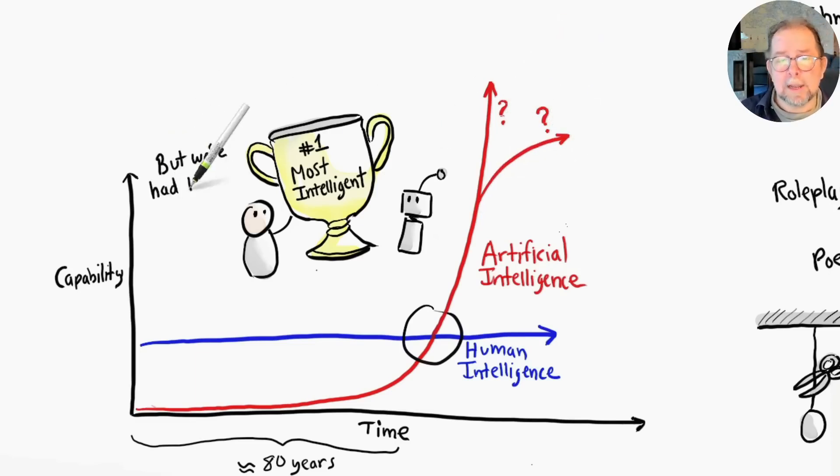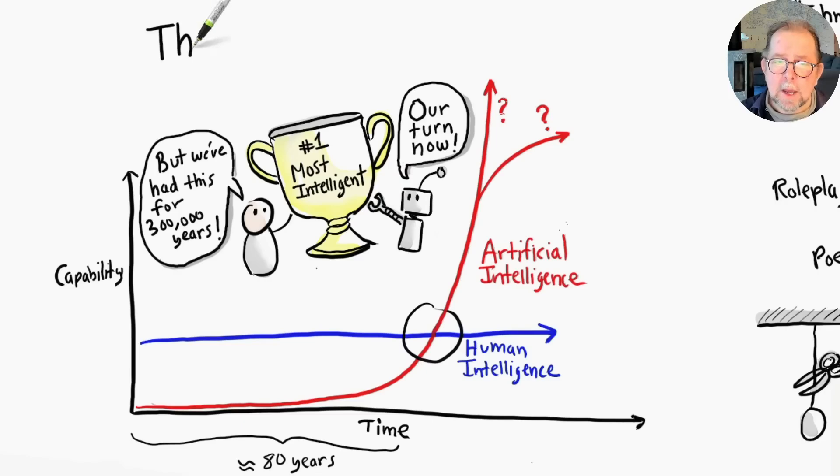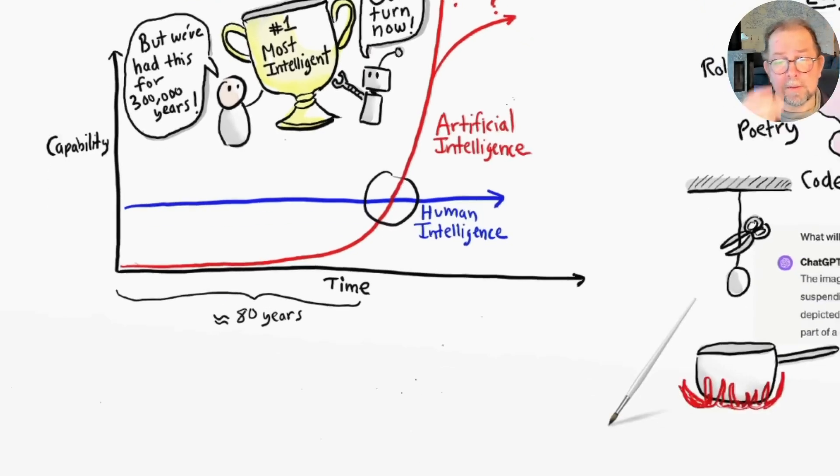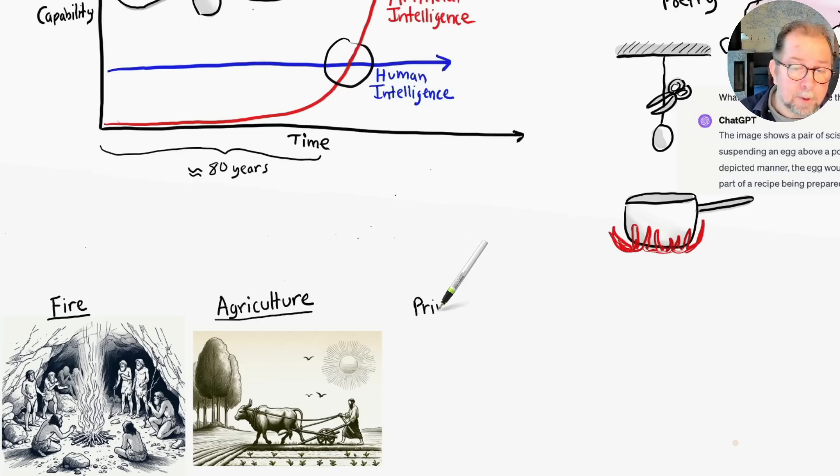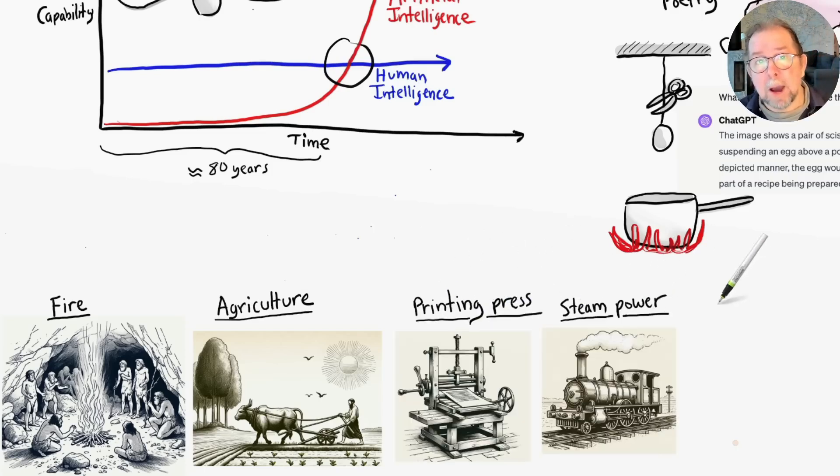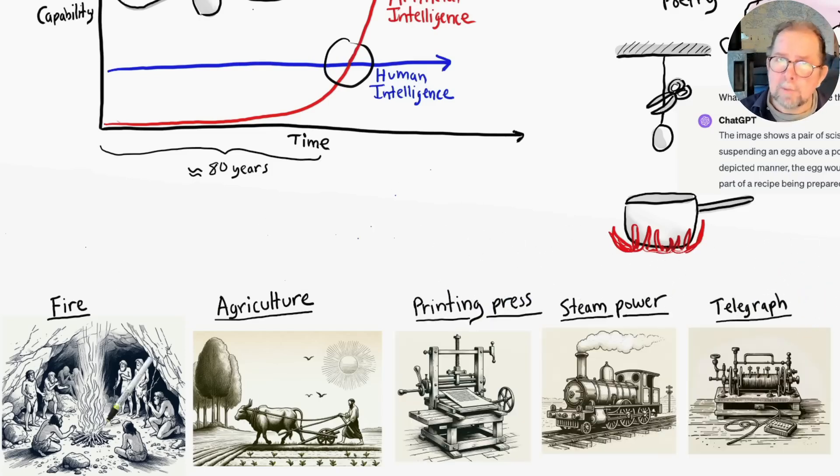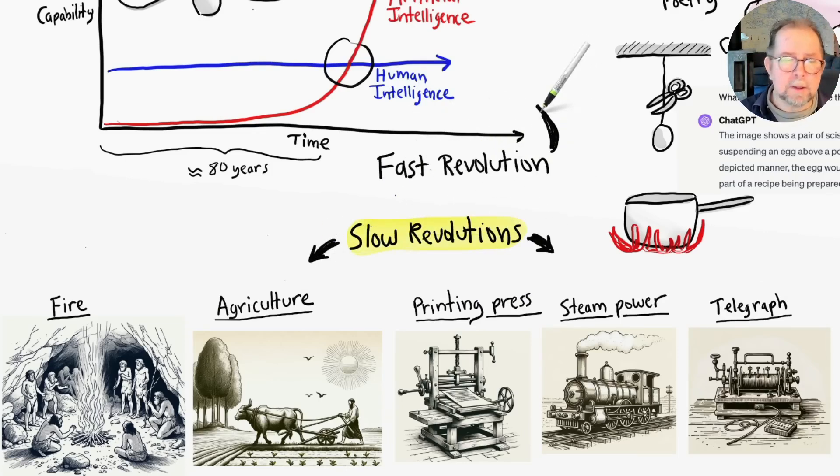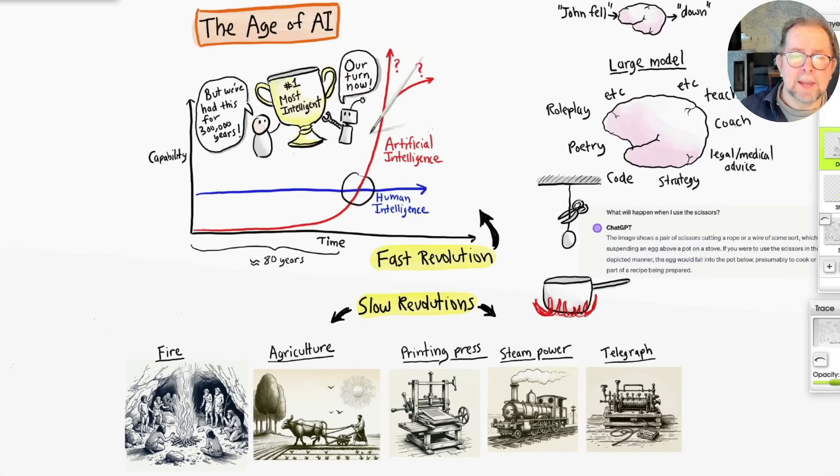Now, this isn't the first revolution we've experienced. We tamed fire, we learned how to do agriculture, we invented the printing press, steam power, telegraph. These were all revolutionary changes, but they took decades or centuries to become widespread. In the AI revolution, new technology spreads worldwide almost instantly. Dealing with this rate of change is a huge challenge for both individuals and companies.